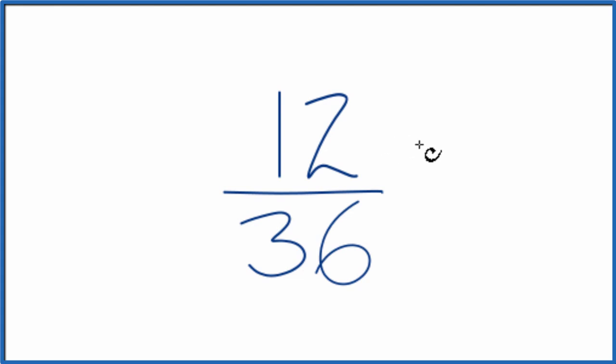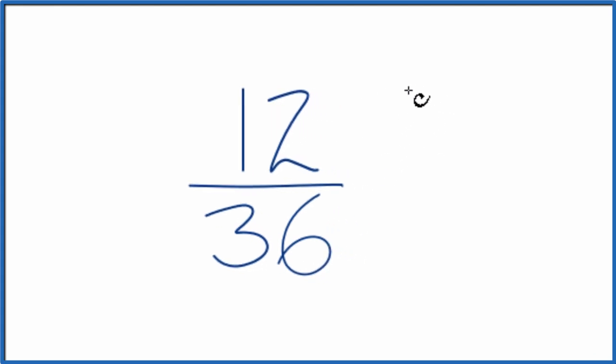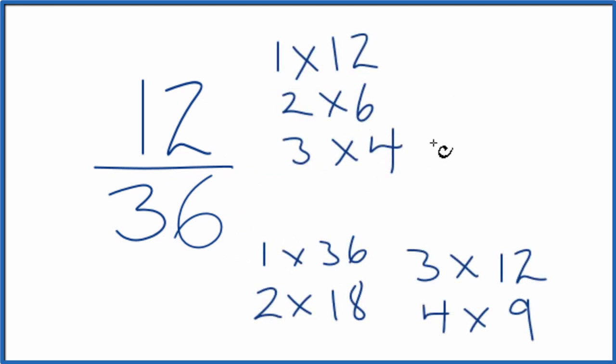To do that, we need to find a factor that goes into 12 and 36. So here are the factors of 12 and 36. We look for the greatest common factor for 12 and 36. It looks like 12. That's the greatest common factor.